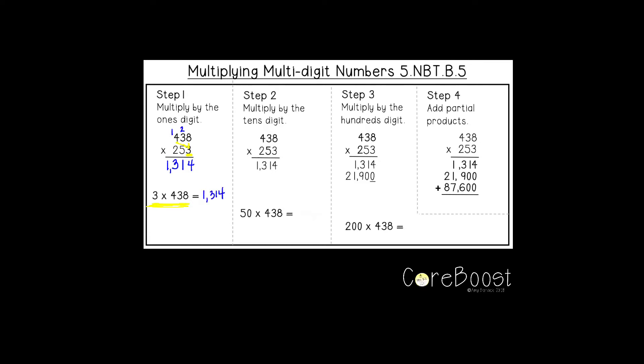Next step: I'm moving this over to show you step two. We're going to use the five, the number in our tens place, and multiply it by each of these numbers. First, I need a placeholder. Five times eight is 40. Write the zero and carry the four. Five times three is 15, plus four is 19. Write the nine, carry the one.